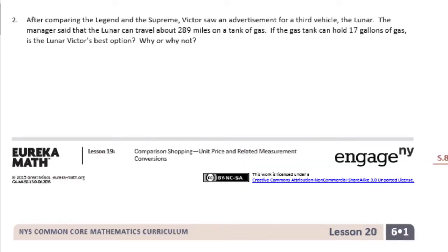Number two: After comparing the Legend and the Supreme, Victor saw an advertisement for a third vehicle, the Lunar. The manager said that the Lunar can travel about 289 miles on a tank of gas. If the gas tank can hold 17 gallons of gas, is the Lunar Victor's best option? Why or why not?